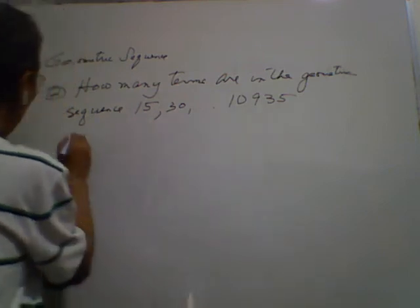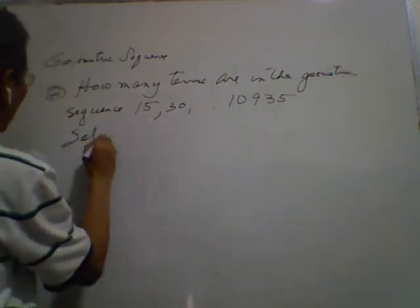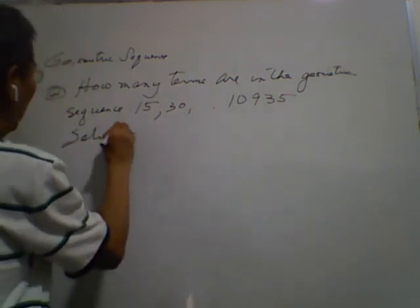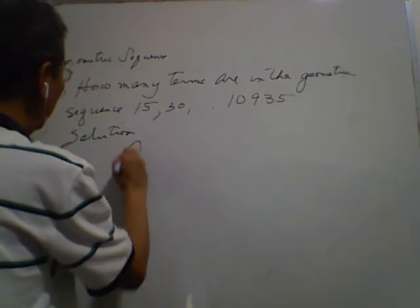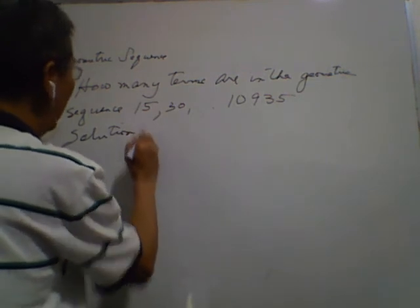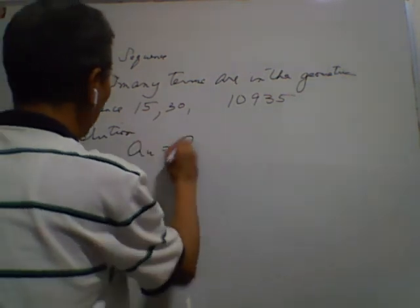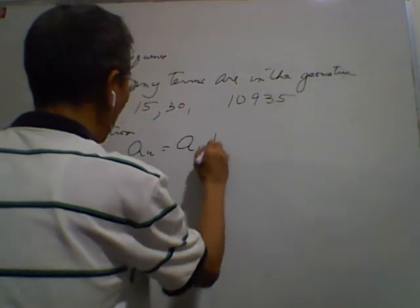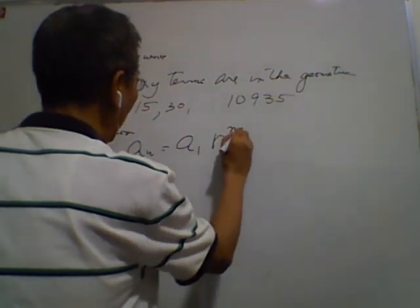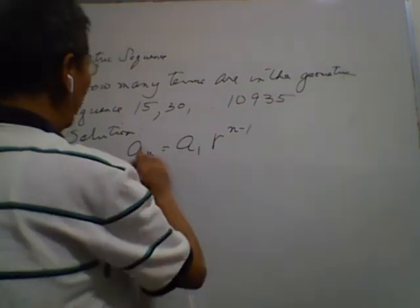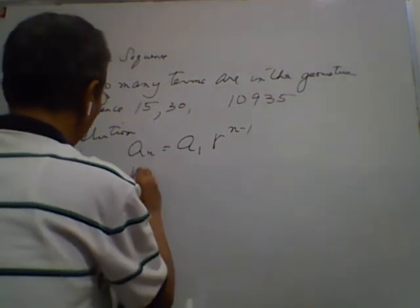So, for our solution, we're going to use the formula a sub n is equal to a sub 1 times r to the power of n minus 1. And we know that a sub n is 10,935.